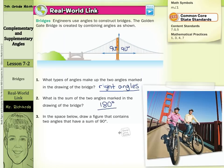So in the space below, draw a figure that contains two angles that have a sum of 90 degrees. Well, if I start off with just drawing something that looks like a right angle, we know that's 90 degrees. And if I draw a ray coming out here, then I have two angles that add up to the 90 degrees. And there is a relationship for that.